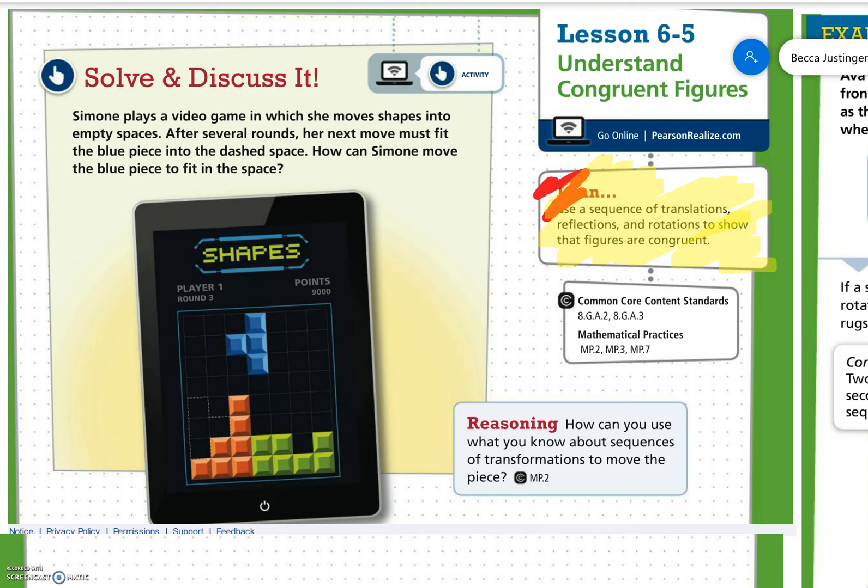Solve and discuss it. Simone plays a video game in which she moves shapes into empty spaces. After several rounds, her next move must fit the blue piece into the dashed space. How can Simone move the blue piece to fit in the space?